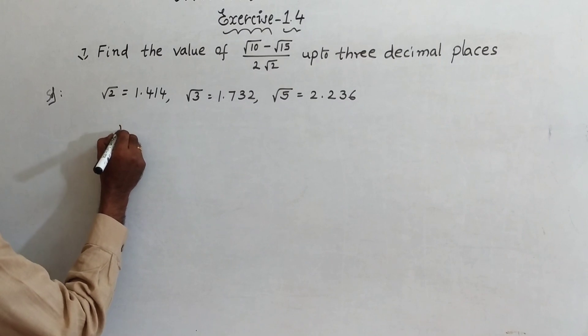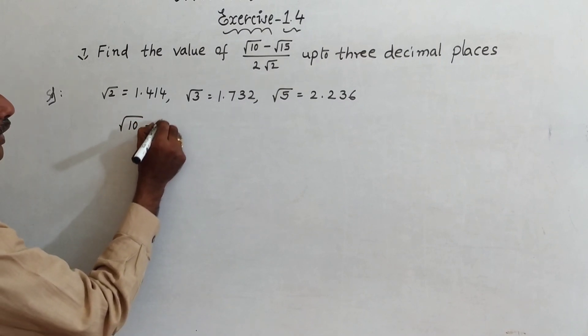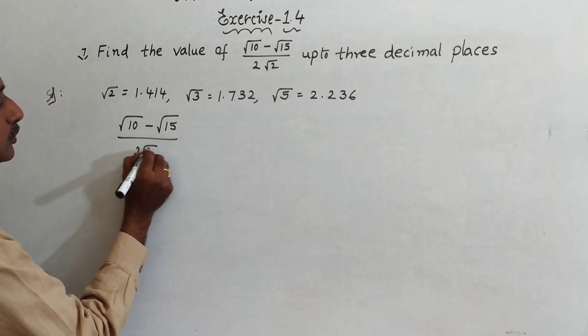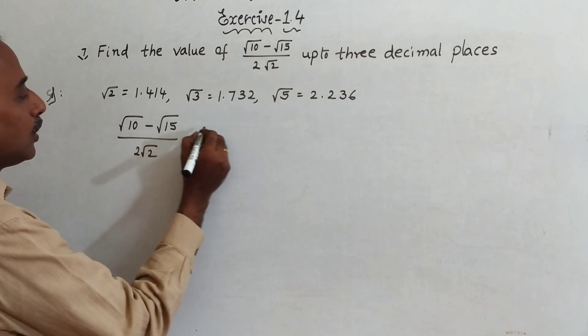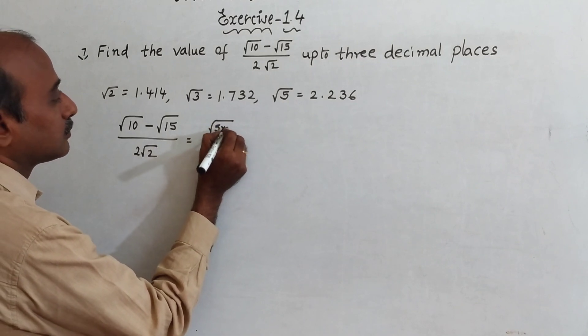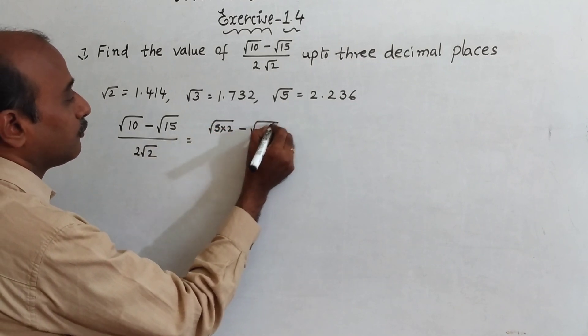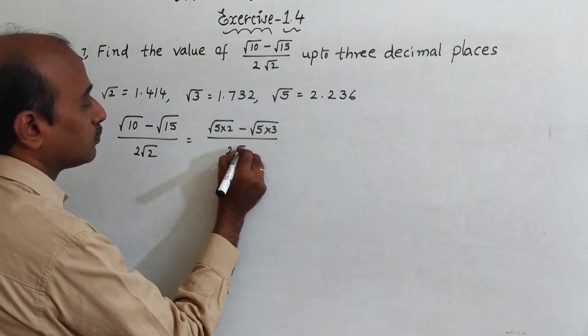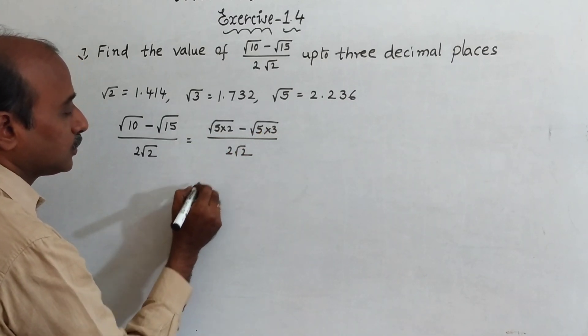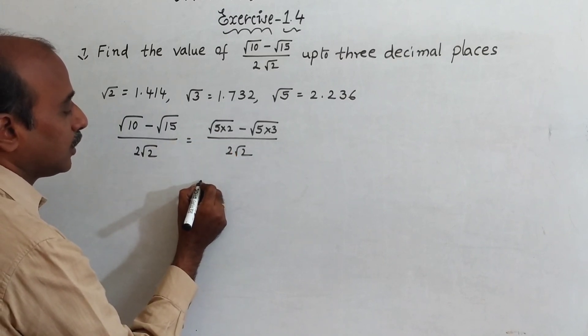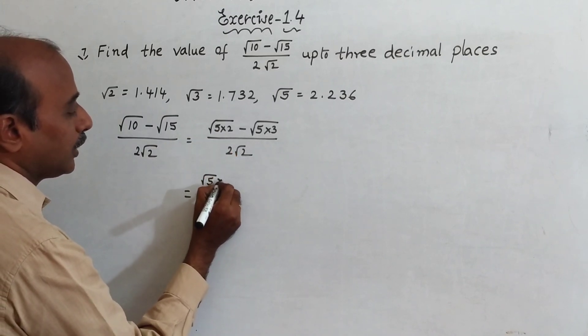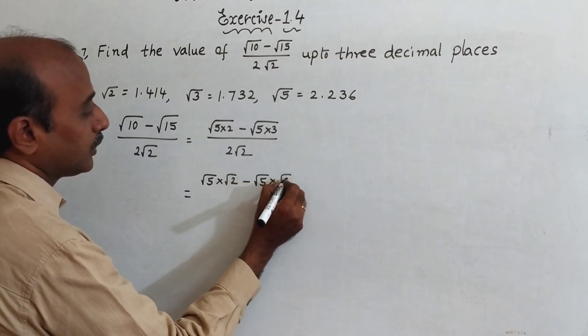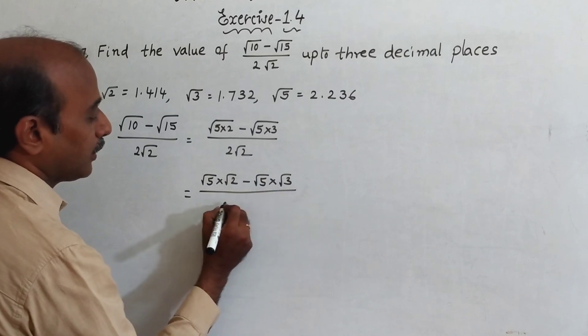Now take root 10 minus root 15 by 2 root 2. That is equal to, 10 we can write as 5 times 2, minus 15 we can write as 5 times 3, by 2 root 2. That is equal to root 5 into root 2 minus root 5 into root 3 by 2 root 2.